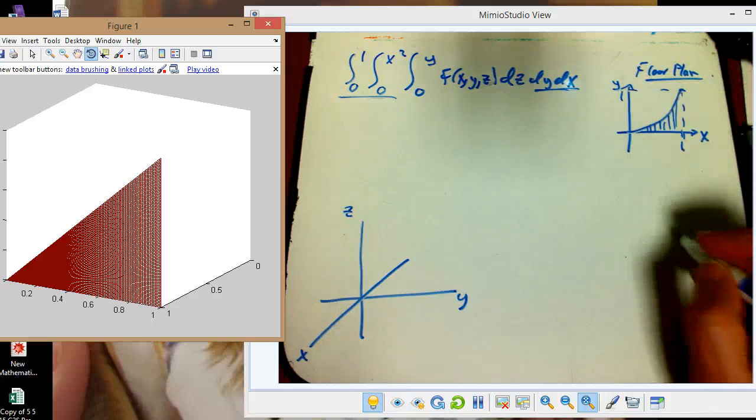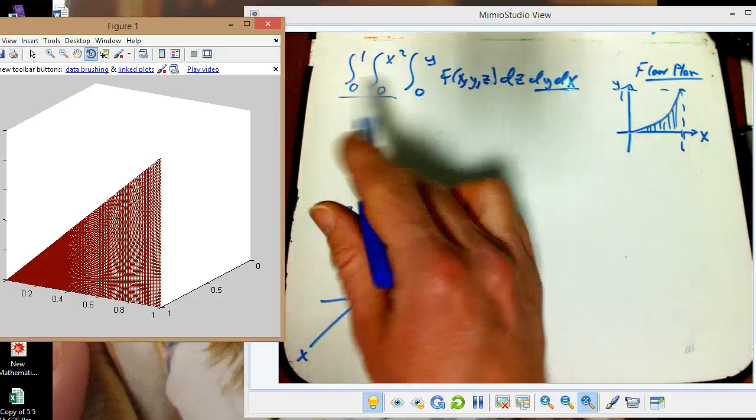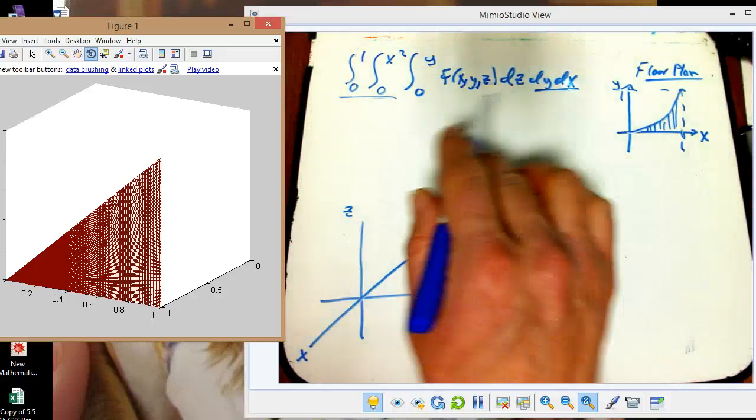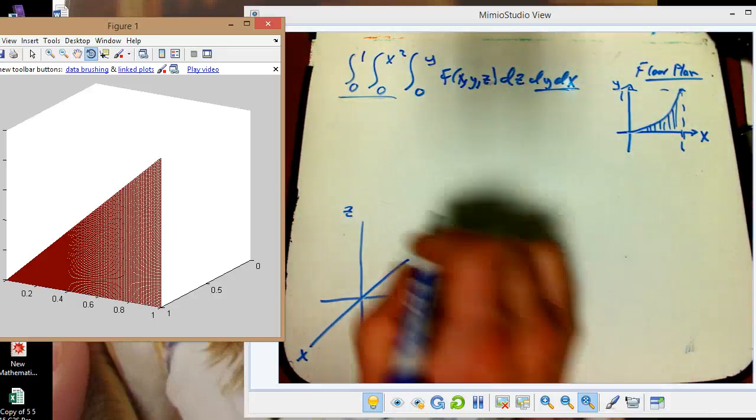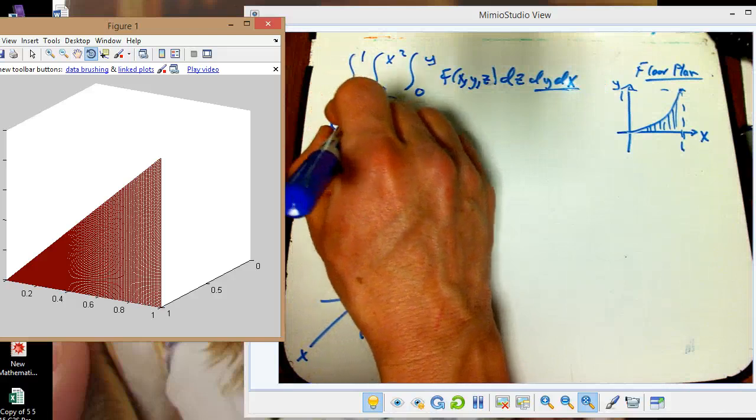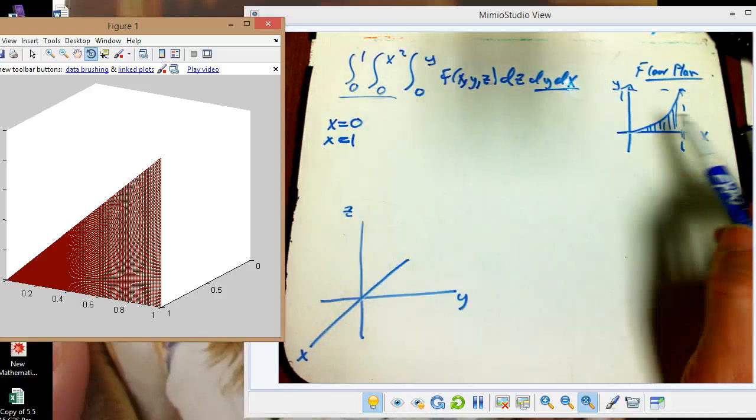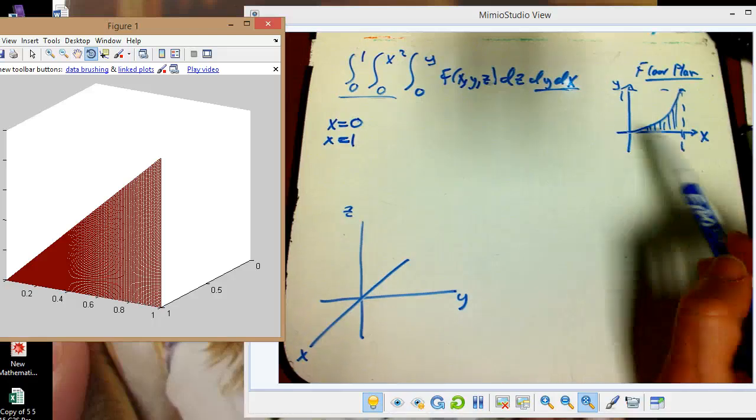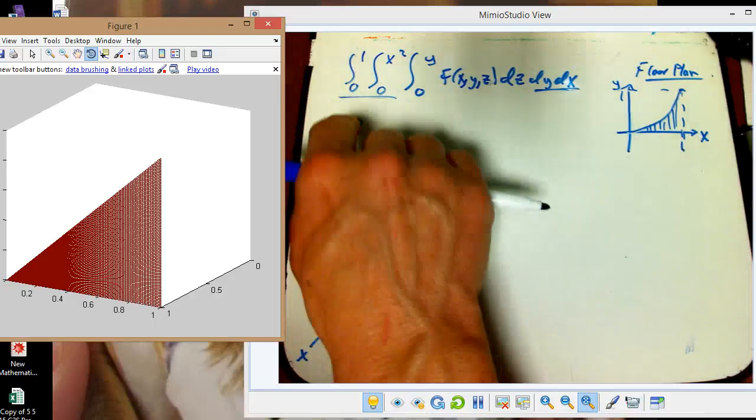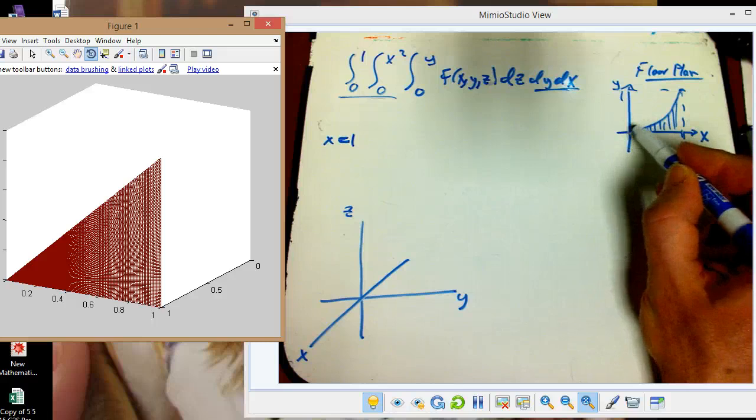So in particular we can start making a list of equations which are really important. There's this setup and then there's an equational setup. We've got x equals 0 and x equals 1. They can be thought of as the edges of the, well actually x equals 0 really doesn't matter. What we're seeing is that x equals 0 is kind of unnecessary because it's squeezed in here.